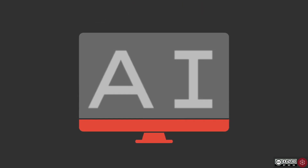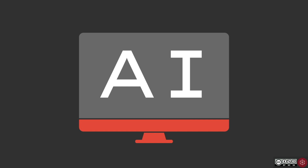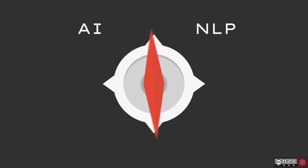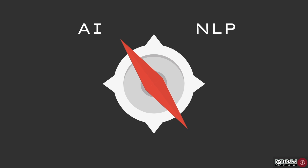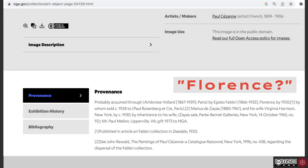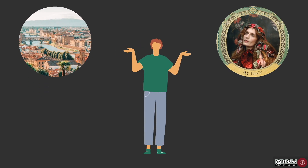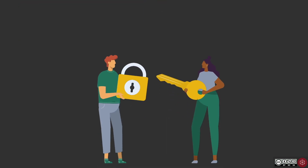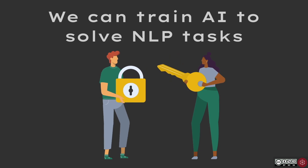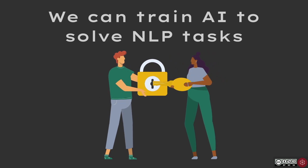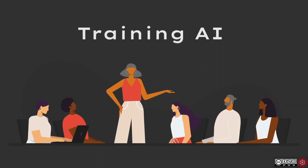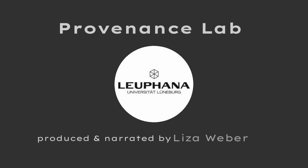Given the complexity of historical texts and the ambiguity of human language, however, we ultimately need artificial intelligence to help solve NLP tasks. This is because AI can contextualise where NLP algorithms simply cannot. AI can discern that the word Florence in the painting's provenance refers to the city in central Italy, for example, rather than the indie rock singer from London. In this way, we can train artificial intelligence to solve natural language processing tasks, which brings us to our next tutorial on training AI at the Provenance Lab.